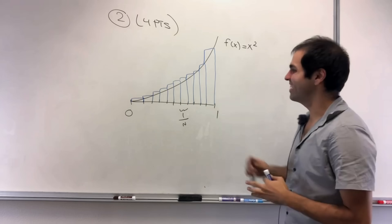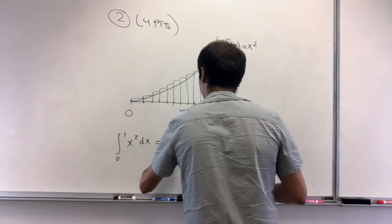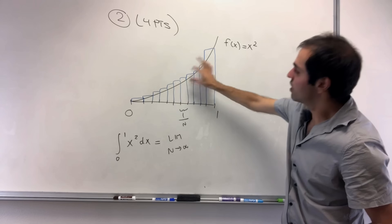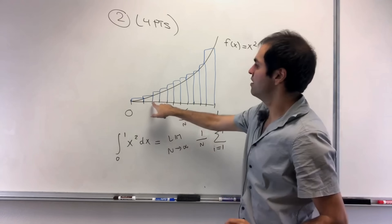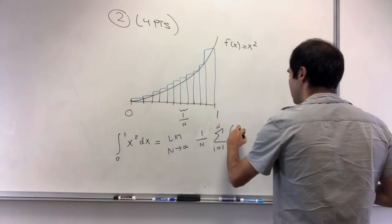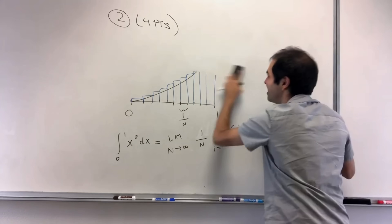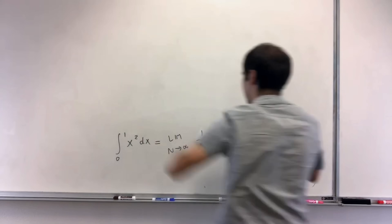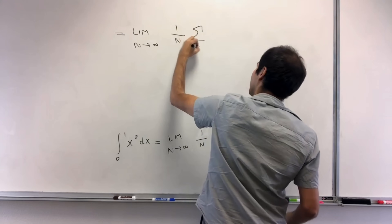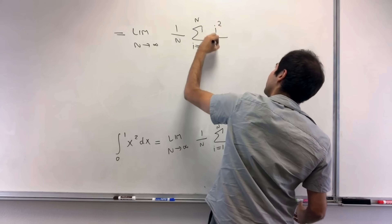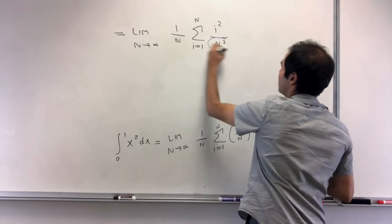The integral from zero to one of x squared dx is the limit as n goes to infinity of width times the sum of heights: 1/n times the sum from i equals one to n of (i/n) squared. We manipulate that: this becomes the limit as n goes to infinity of 1/n times the sum from i equals one to n of i squared over n squared — not to be confused with i squared equals minus one, that's different. The n squared factors out and becomes n cubed, giving limit as n goes to infinity of 1 over n cubed times the sum from i equals one to n of i squared.